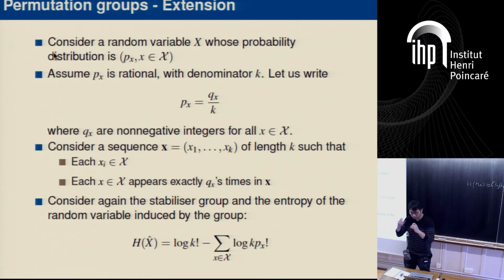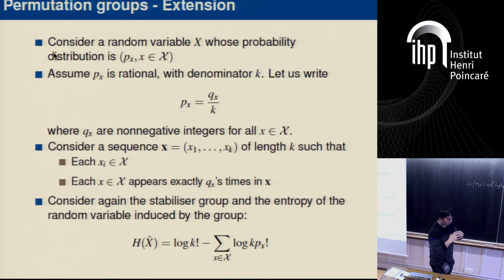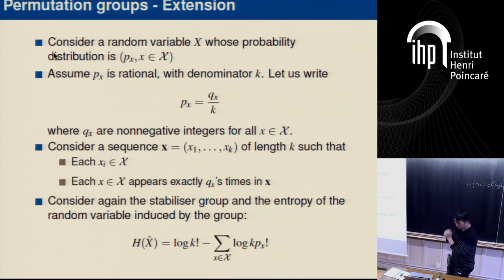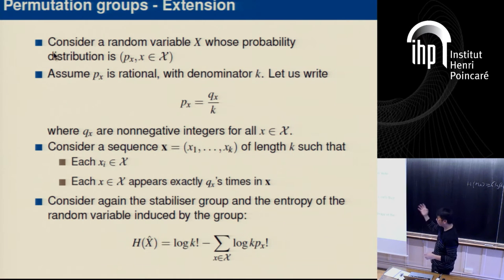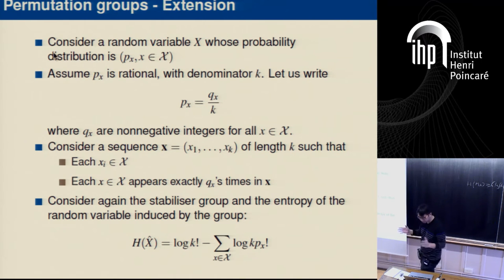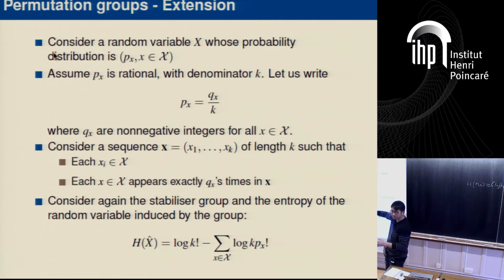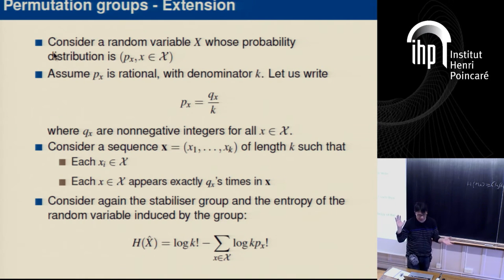Let's assume that px is rational — that means the probability mass can be written as qx over k, where qx and k are integers. In fact, you can assume k is arbitrarily large; you can always scale the denominator of the probability mass function.